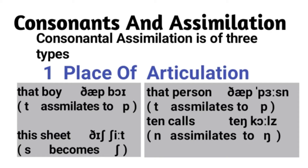Consonantal assimilation is of three types. The first one is place of articulation. What is meant by it? It means that two sounds — one at the end of one word and another at the start of another word — come to be pronounced from one place. Simply put, one sound becomes similar to its neighboring sound in terms of place of articulation.